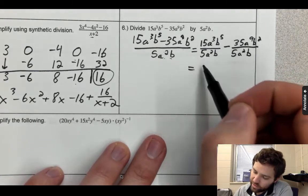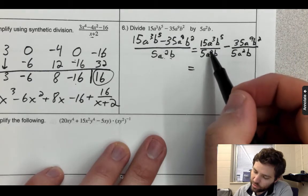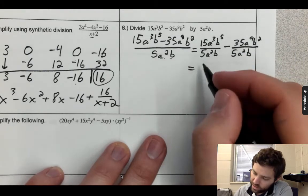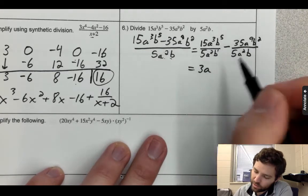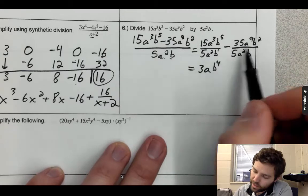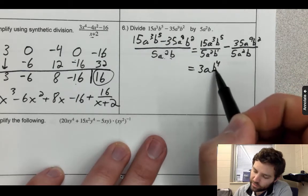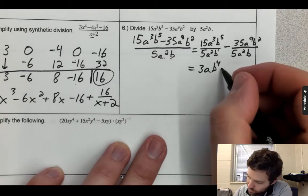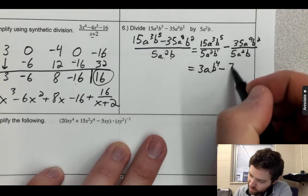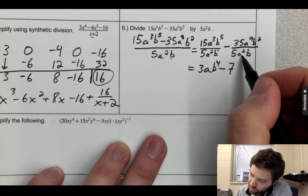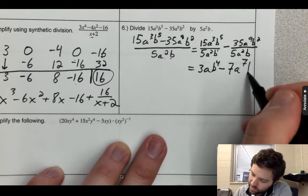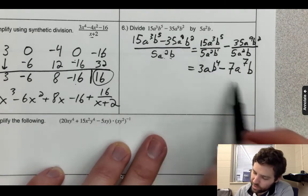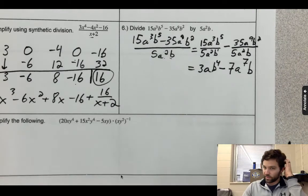take 15 over 5, that's 3. a³ over a² is a. b⁵ over b is b⁴. So I'll have 3ab⁴. Then here minus 35 over 5, that's 7. a⁹ over a² is a⁷. b² over b is b. So that's my final answer: 3ab⁴ minus 7a⁷b.